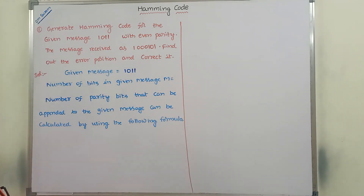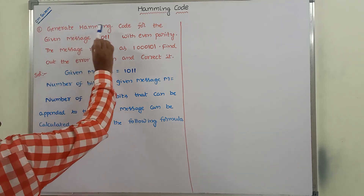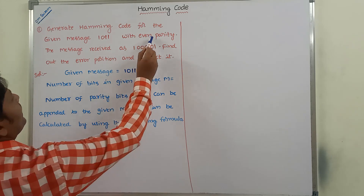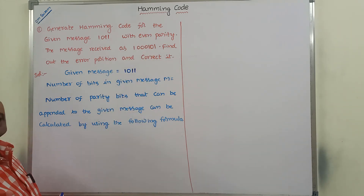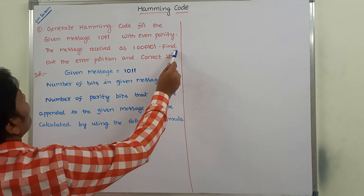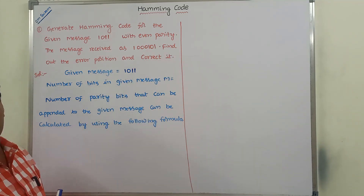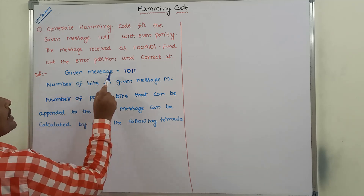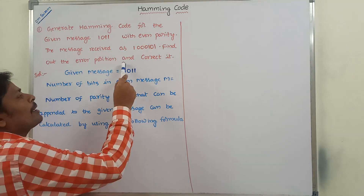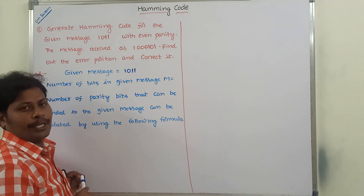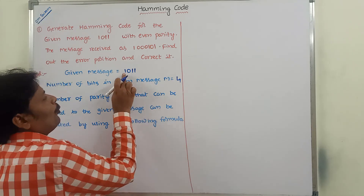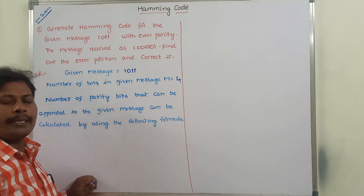We have to solve one example problem: generate Hamming code for the given message 1011, sent with even parity. At the receiver side, the message is received as 1000101. Find out the error position and correct it. The given message is 1011. First, how many bits are present in the given message — that is denoted by m. So m is equal to 4, since there are four bits: 1, 0, 1, 1.